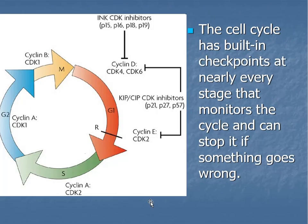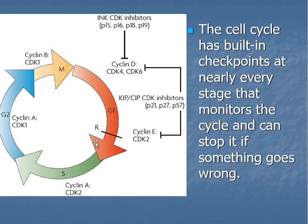This next image is still the cell cycle, but it shows all of the built-in cyclins or checkpoints that are present as the cell goes through these steps. At the end of every phase — G1, S, G2, and M phase — there is a cyclin attached. It's basically like a street light: stop, go, or pause for a moment. If you think about the cell cycle in terms of a clock, every little tick is a built-in checkpoint, with the big checkpoints at the end of each phase. All these checkpoints are built in so that the cell can be monitored and alerted if something goes wrong.